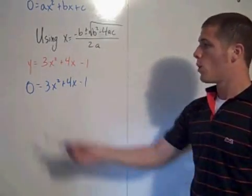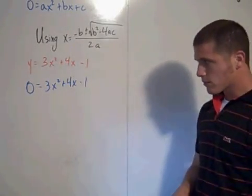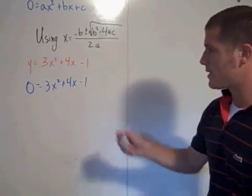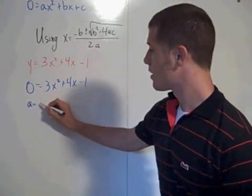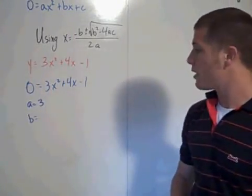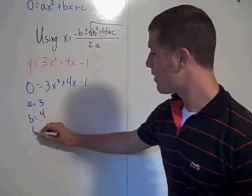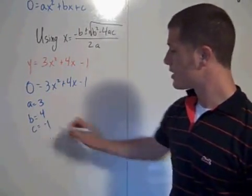Because you want to find the x values when y is equal to 0. So your a value in this case is equal to 3, the b value here is 4, and the c value here is negative 1.